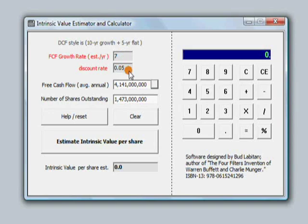starting with an assumed free cash flow annual growth rate of 7%, the estimated intrinsic value per share is approximately $48.46.